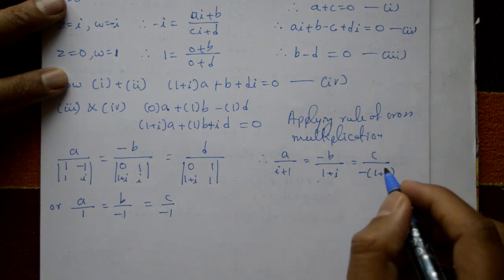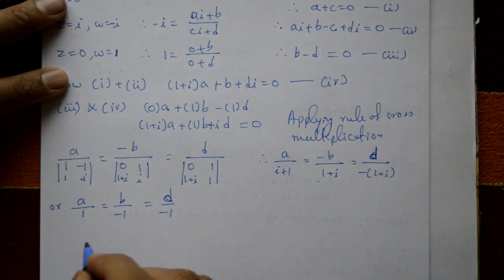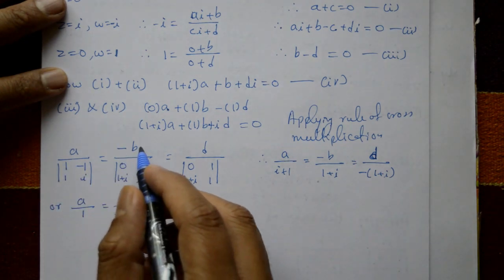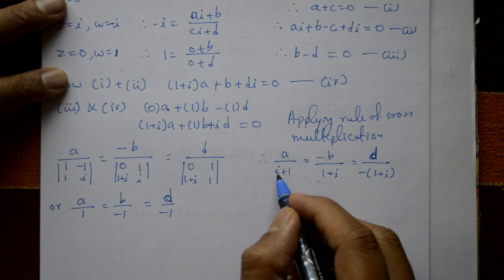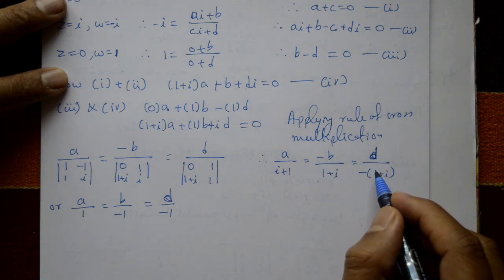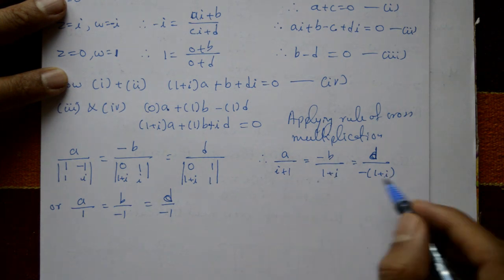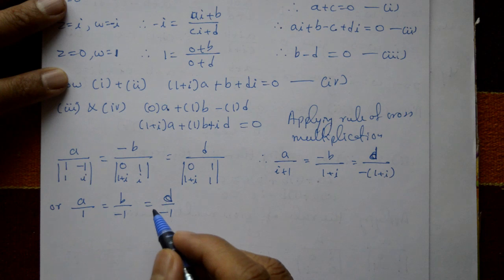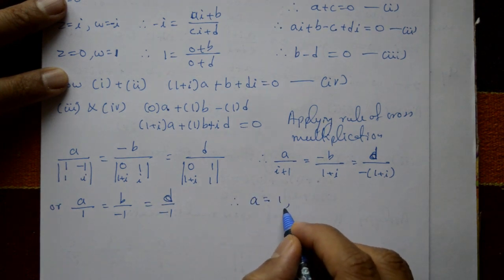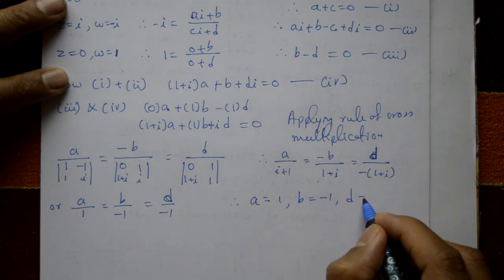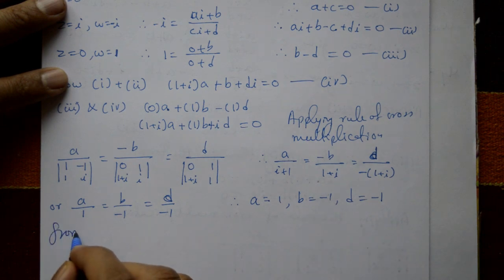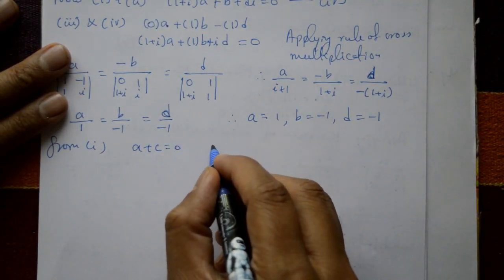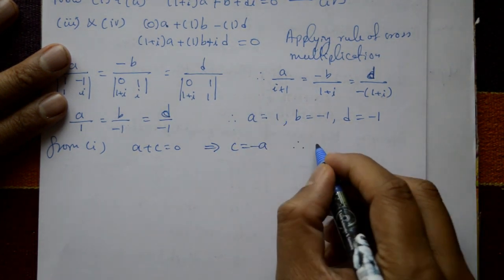Since (1 + i) is common, we can cancel it, giving a/1 equal to b/(minus 1) equal to d/(minus 1). Therefore a equal to 1, b equal to minus 1, and d equal to minus 1. From equation number one, a plus c equal to 0, so c equal to minus a equal to minus 1.